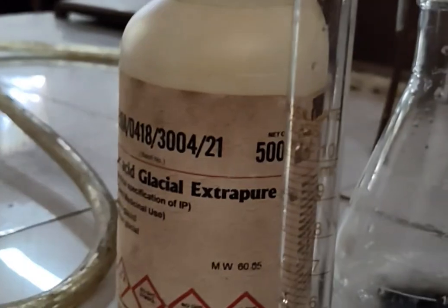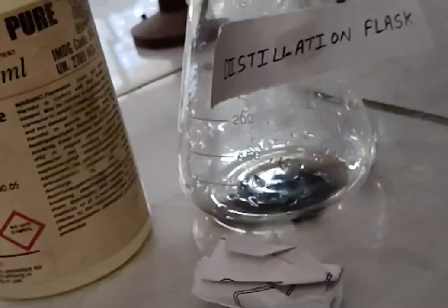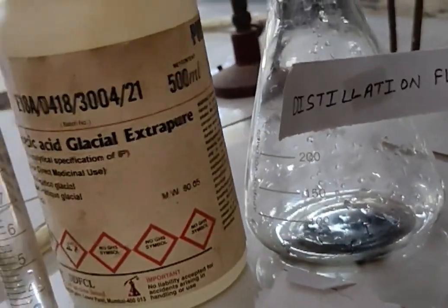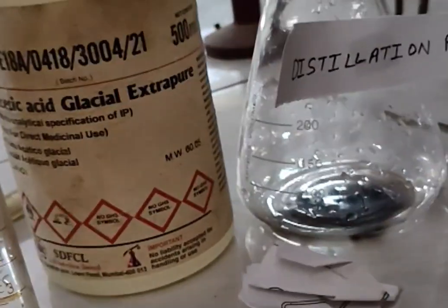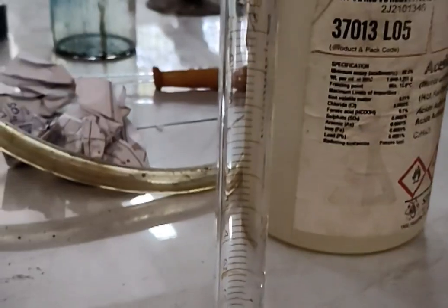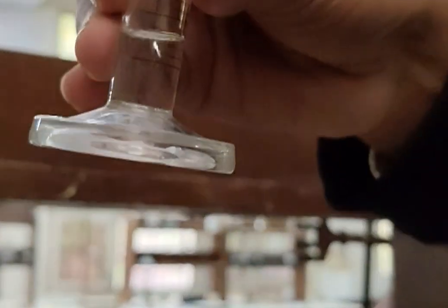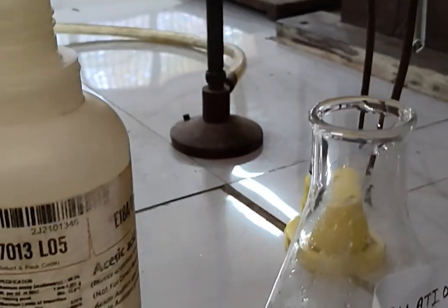The materials needed for our experiment are measuring cylinder, glacial acetic acid, sodium acetate trihydrate crystals, and distilled water, conical flask. First, we will take 1.5 ml of glacial acetic acid in the measuring cylinder and we will make a 100 ml solution of acetic acid in a beaker.